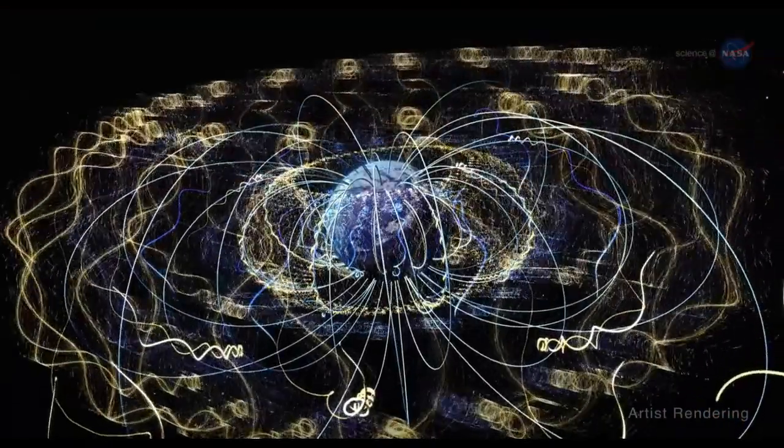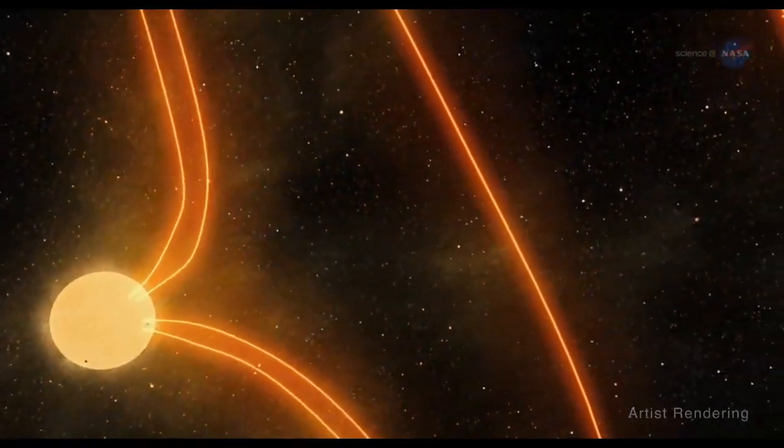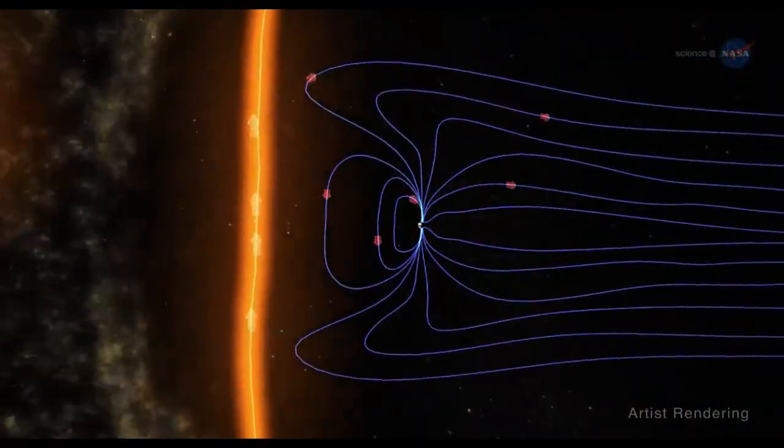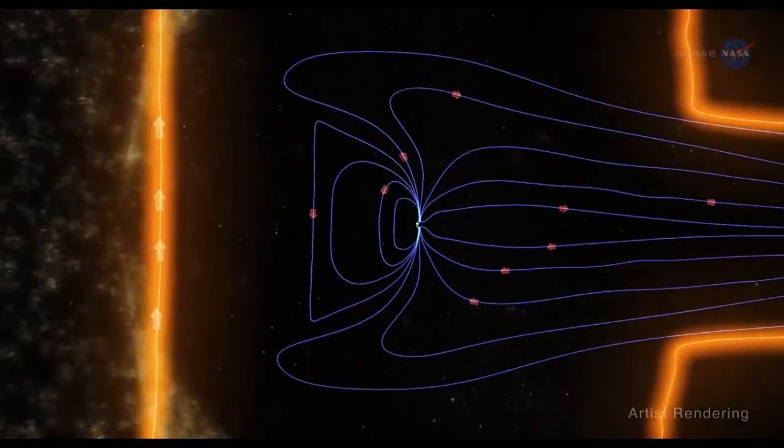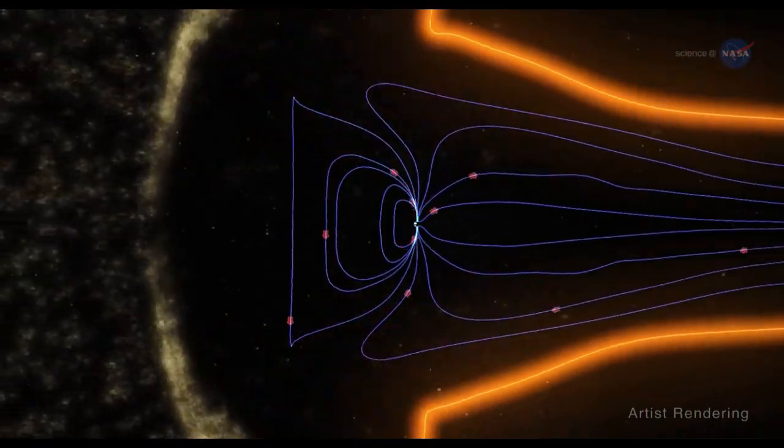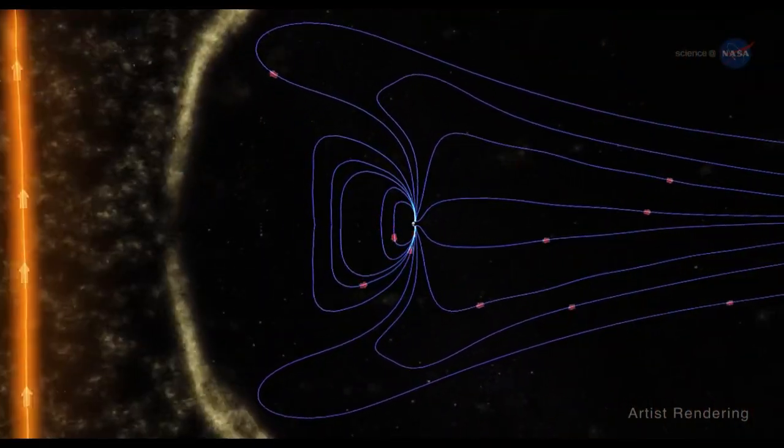The magnetosphere is a permeable shield. The solar wind will periodically connect to the magnetosphere, forcing it to reconfigure. This can create a rift, allowing energy to pour into our safe haven.